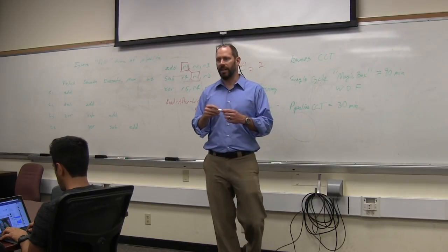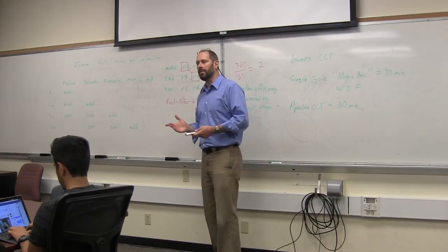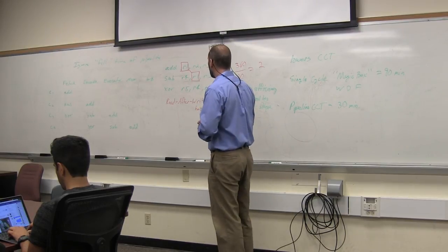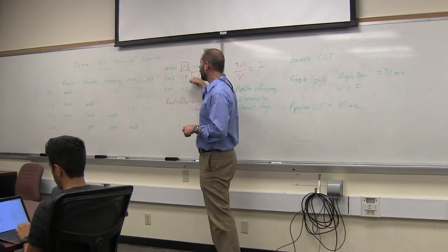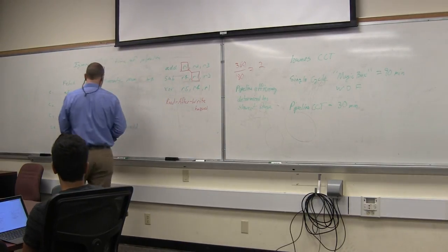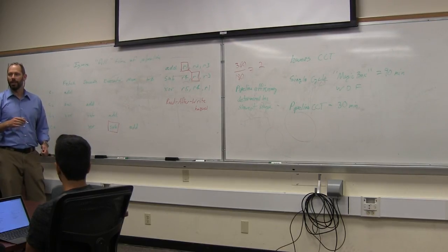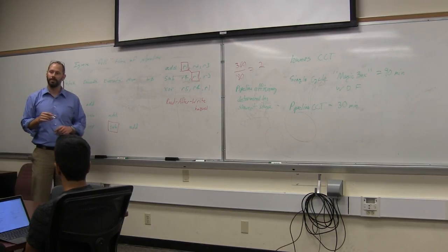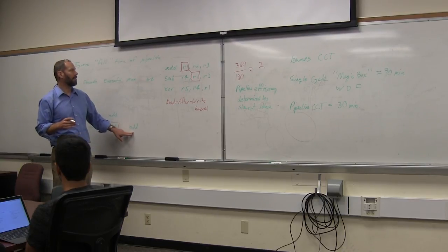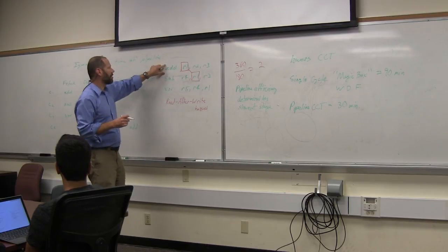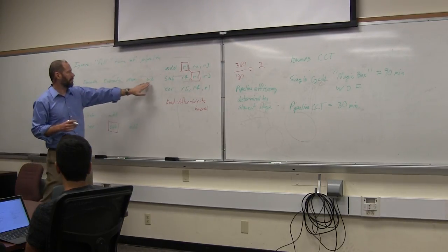And you think, well, that's not a hazard. Of course you should write something before you should read it. It doesn't make sense to read something before you've written it. But that, in fact, is the hazard. If I read R1 while the sub is here in the execute stage, I get the wrong value. Why? Because R1, the sum of R2 and R3 that's generated in this instruction, isn't committed to the register until the write back stage.